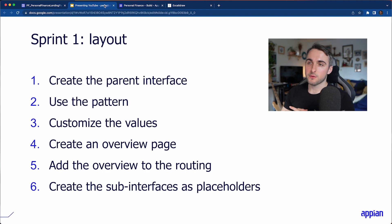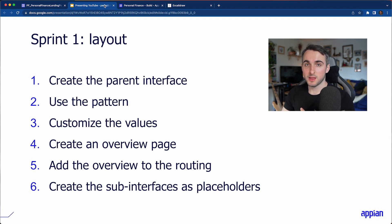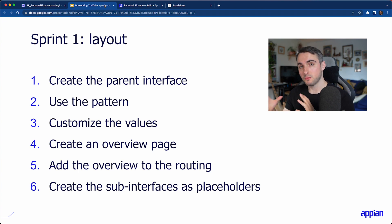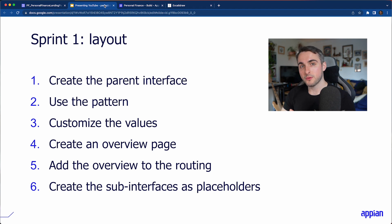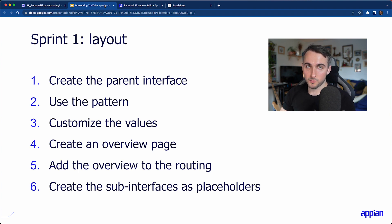So this is the plan for Sprint 1: we want to get the layouts done. We're going to create the parent interface, which will be a landing page, and we're going to use a pattern for the navigation — just drag and drop it to save time. Then we'll customize the pattern values, create an overview page, add it to the routing of the navigation, and create sub-interfaces as placeholders.